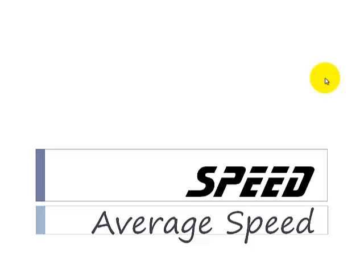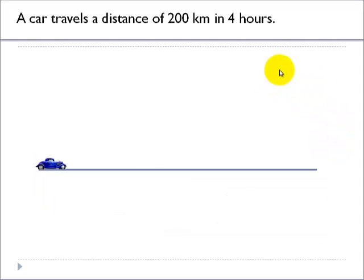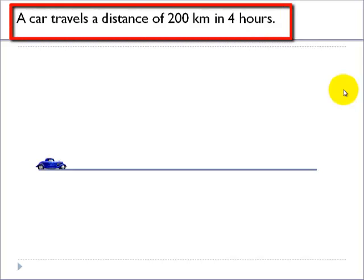Hi, now we are going to talk about average speed. What is meant by average speed? Let's take a scenario. A car travels a distance of 200 kilometers in 4 hours.